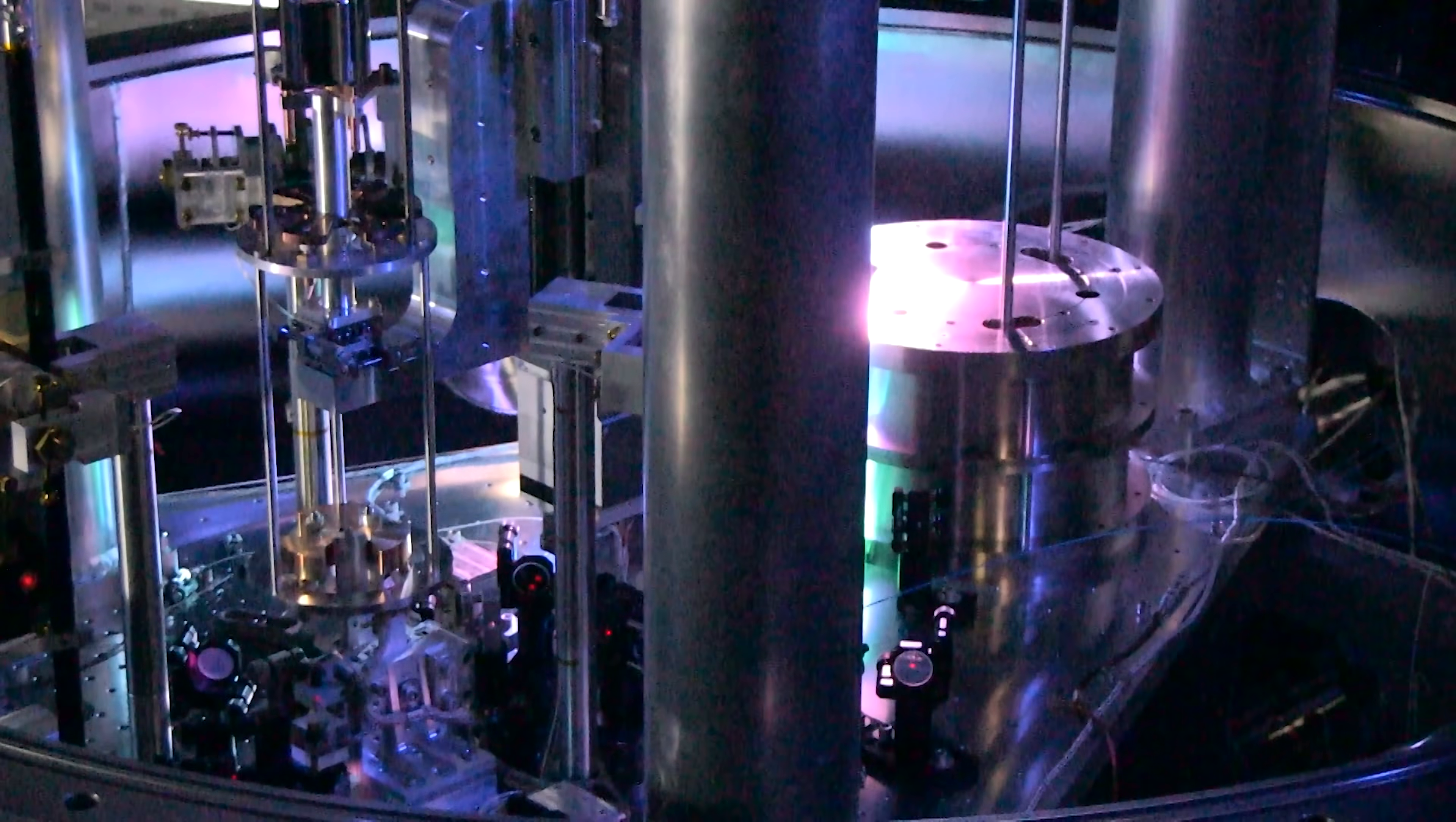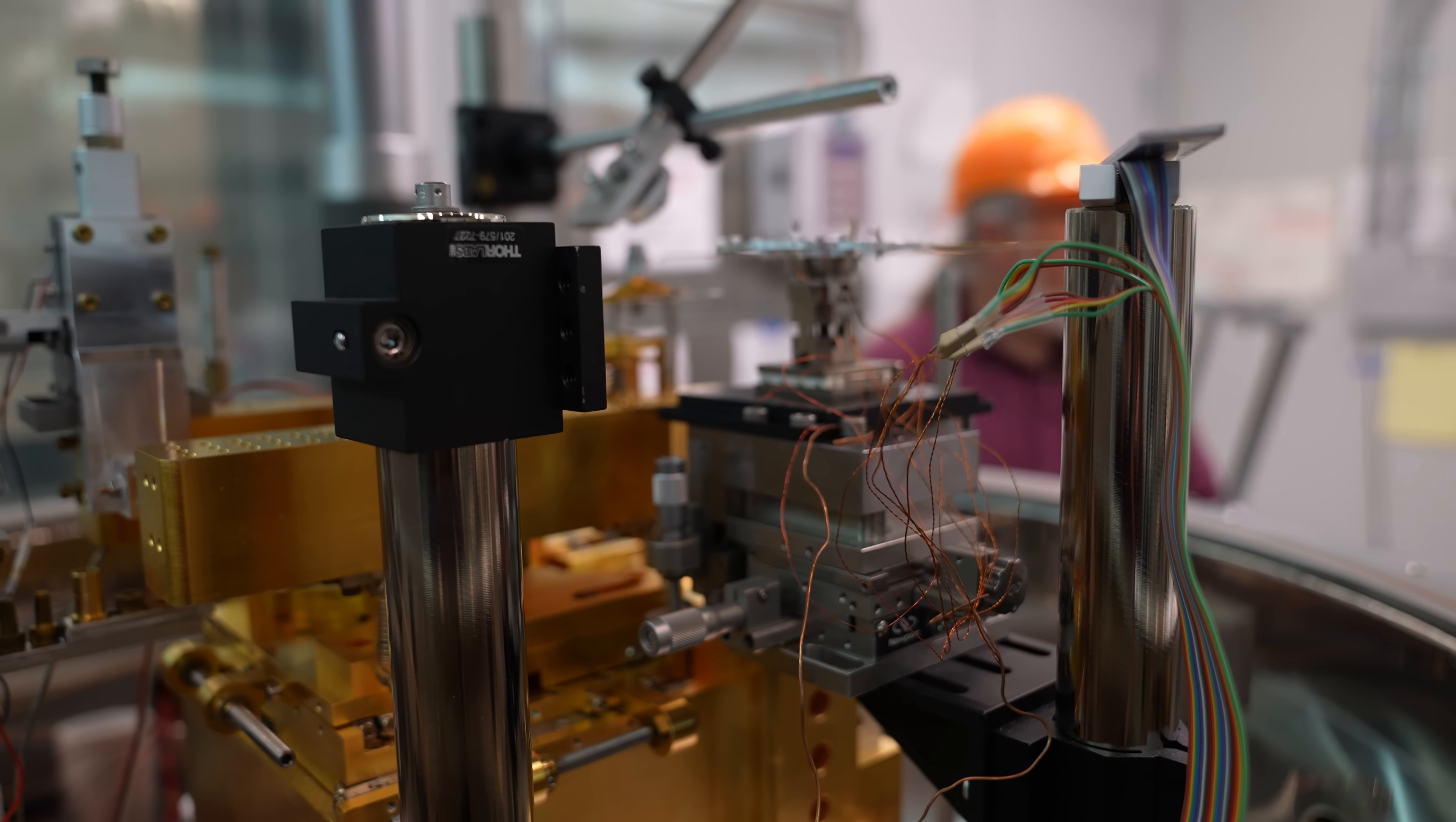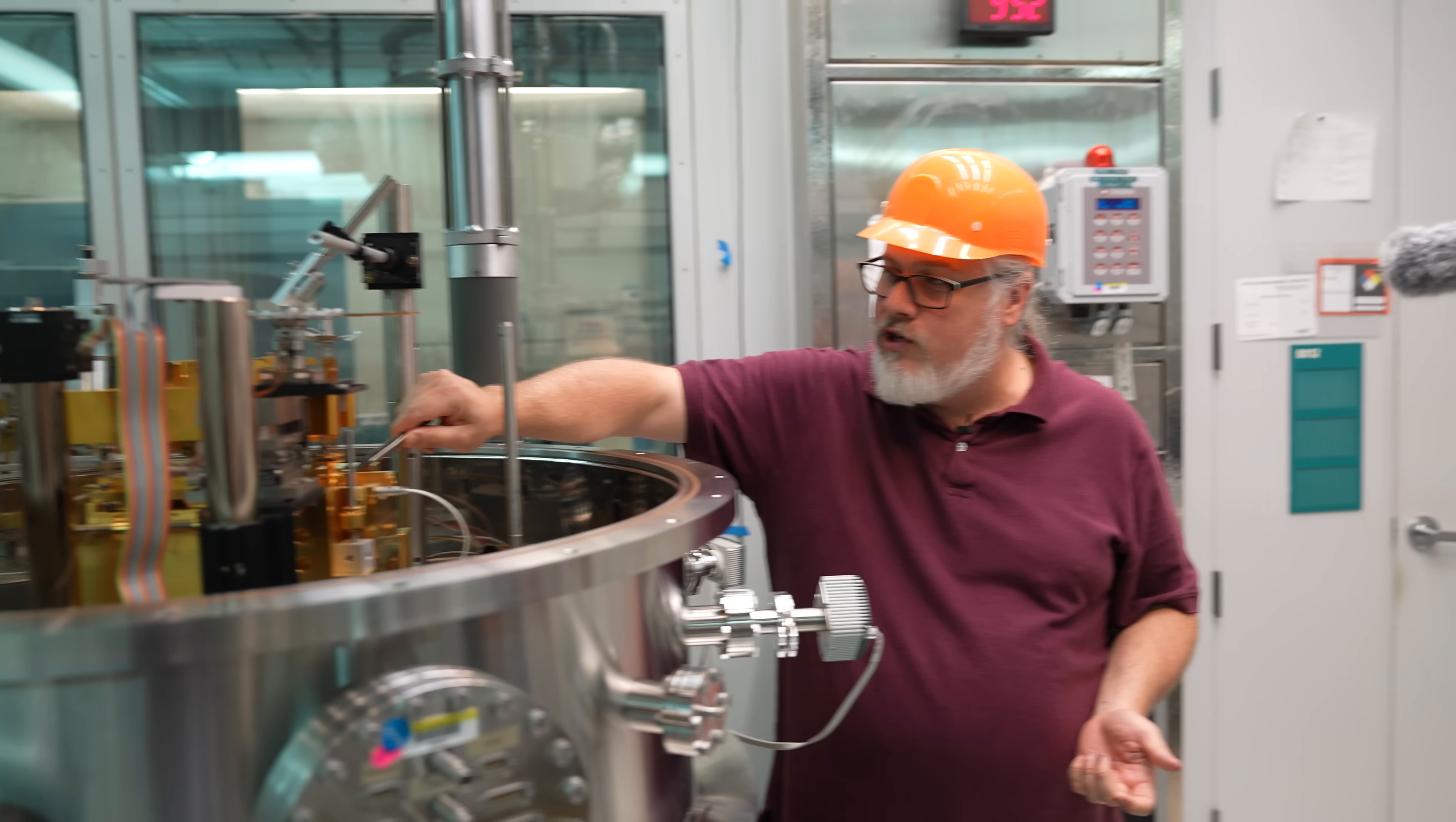This is kind of the smaller cousin of the kibble balance. It's called the electrostatic force balance, or the EFB. And this is a balance that was designed specifically to measure mass sort of in the milligram range. The kibble balance uses an electromagnet. I use a capacitor, which is basically two metal electrodes that you apply a potential to. And when you apply a potential, there's an attractive force between those two electrodes.